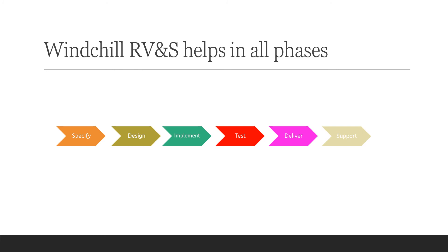As far as testing is concerned, you can create test cases, link them to requirements, test and monitor them. You can create test suites, test cases, and test objectives, link everything, and also attach the end results once the test is completed. On the delivery side, you can package the software and deliver it to the customer, and there's also support functionality where you can manage tickets. So Windchill RVnS or PTC Integrity is a tool where you can use just one tool from the beginning to the end — it's a one-stop solution for your software requirements.